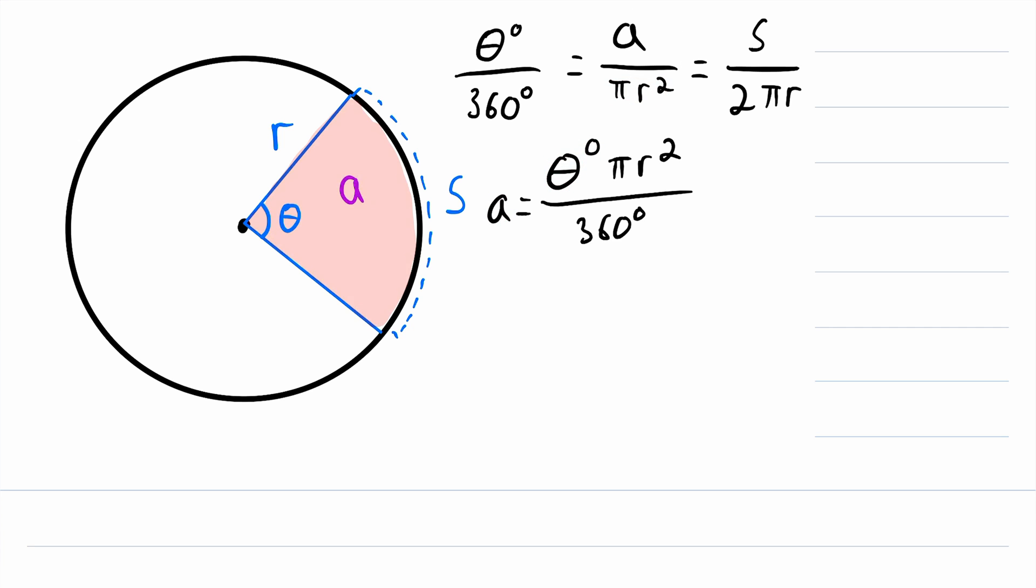But of course that's not the only equation we have. We could also use this equation, solving for A in terms of the arc length. To do that, again we would just multiply both sides by pi R squared. That would give us A, the area of the sector, is equal to S, the arc length, times pi R squared. This is all getting divided by that two pi R. And we can do some simplification here. The pi's cancel out and one factor of R cancels out. So this is equal to S, the arc length, multiplied by R, the radius, divided by two.